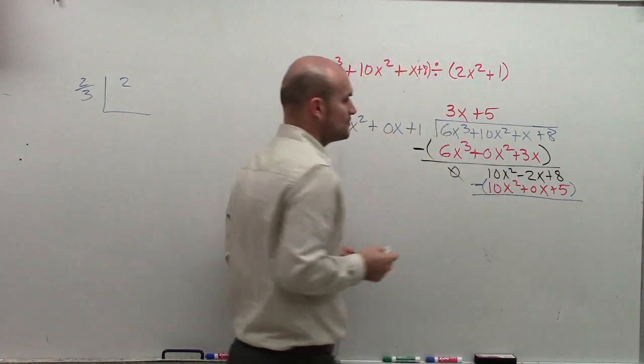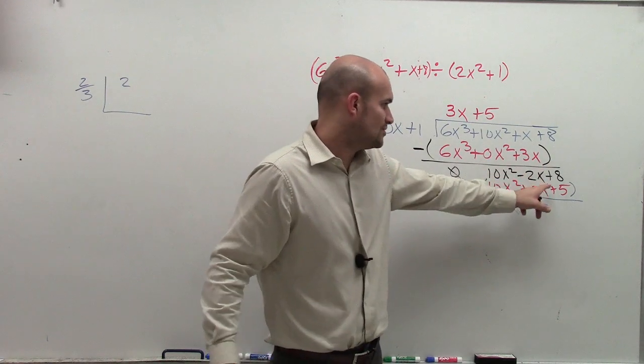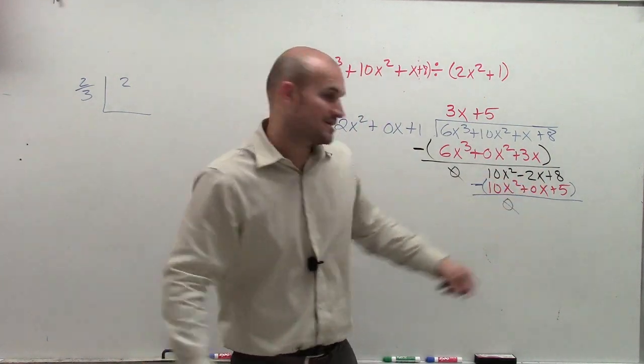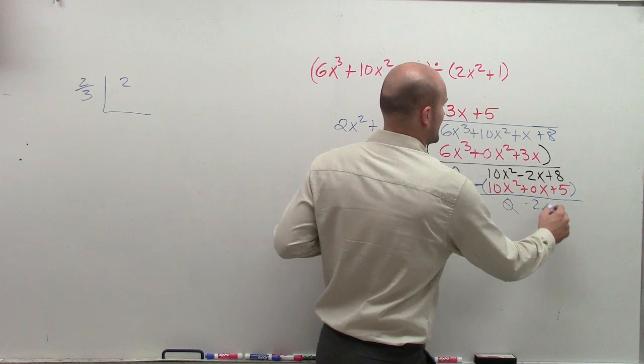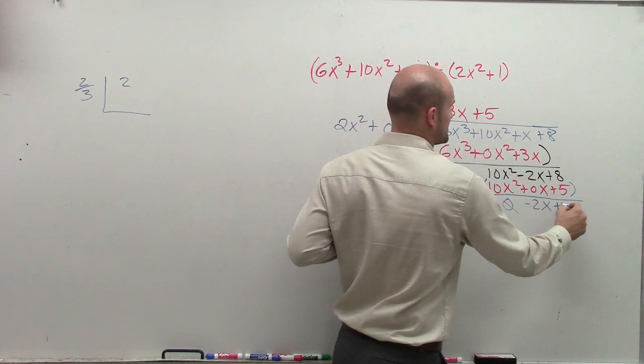So I have 10x squared minus 10x squared, which is 0x squared, which is 0. So negative 2x minus 0x is just going to be negative 2x, and then 8 minus 5 is going to be plus 3.